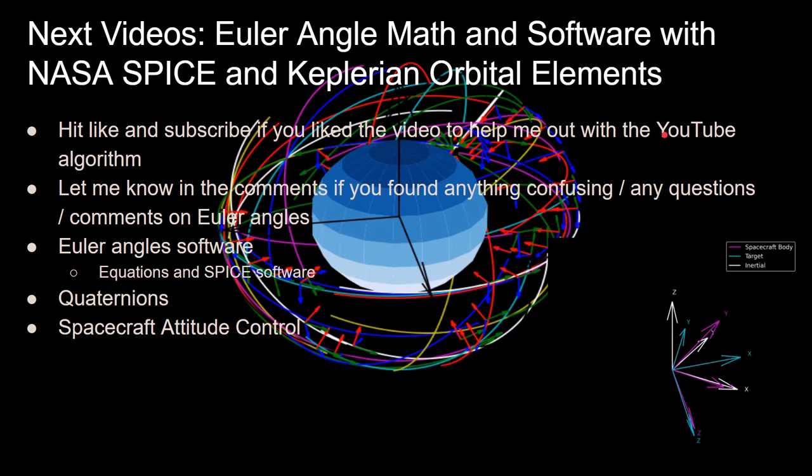That's pretty much it for this video. Be sure to hit like and subscribe if you liked the video to help me out with the YouTube algorithm. Let me know in the comments if you found any of this confusing or if you still have any more questions or comments about Euler angles so I can put them into the future videos. In the future videos, we'll be going over the Euler angles math and the software, including using the NASA SPICE system. I'm also going to be making a video going more into depth on the Keplerian orbital elements in the orbital mechanics with Python series.